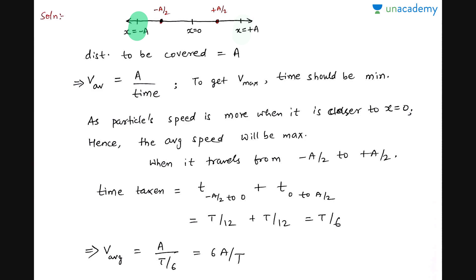We can say that the particle's speed is highest around the mean position, and it is symmetrical. We want the average speed to be maximum, or the time to cover distance A to be minimum. Minimum time will occur when the particle moves from −A/2 to +A/2, because near the mean position the SHM speed is highest.